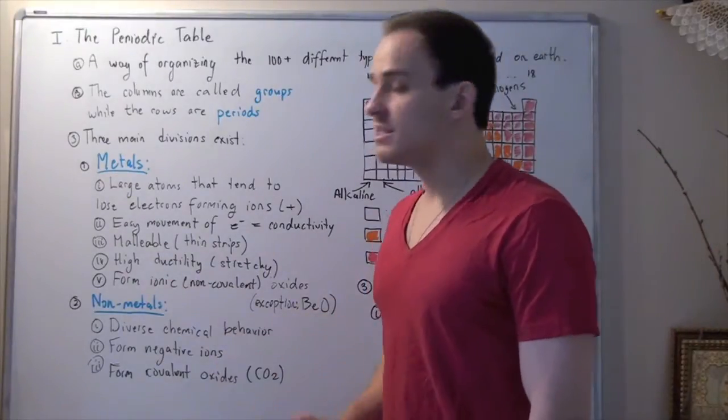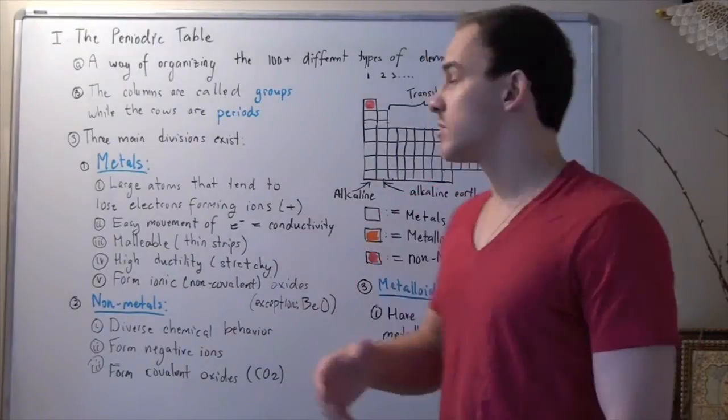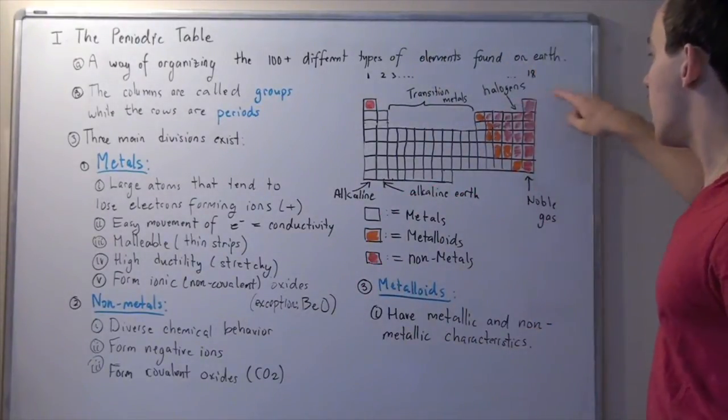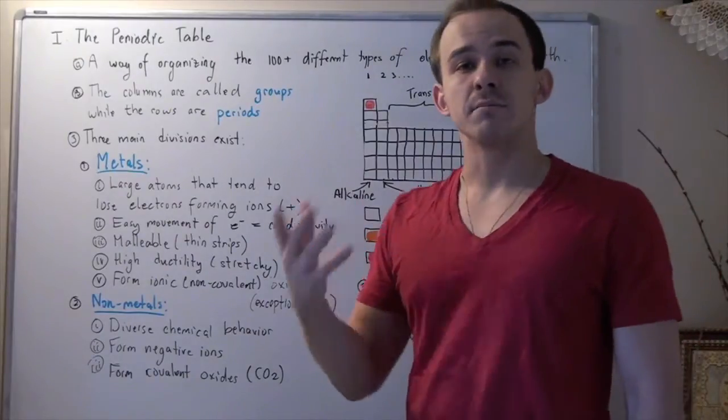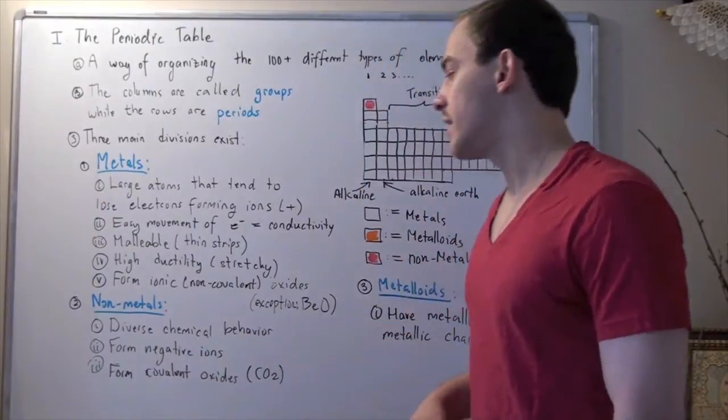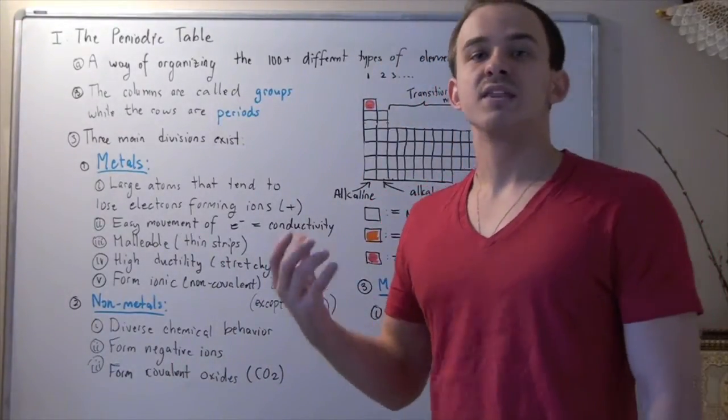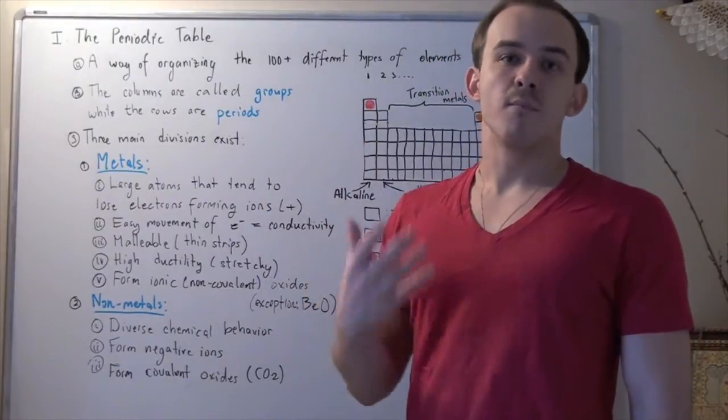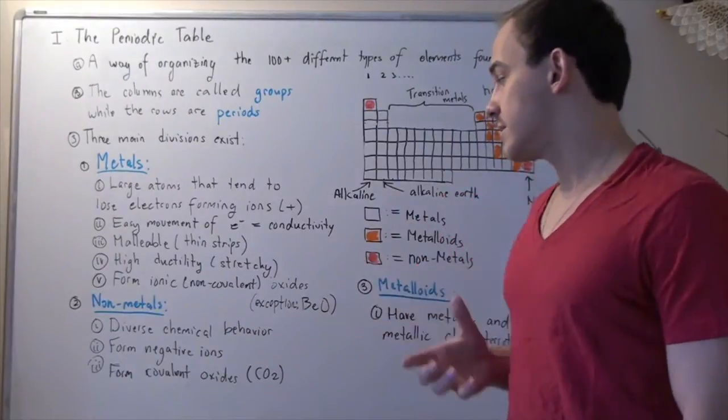Now let's look at the second type of division, namely the non-metals. Now non-metals, which are found on the right side of the table, the red guys, have very diverse chemical characteristics. And these guys form negative ions. They don't lose electrons very easily. In fact, they gain electrons more easily than metals, and that's why they form negative oxidation states.